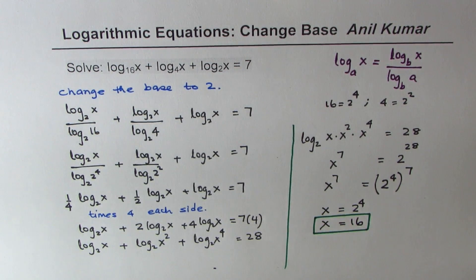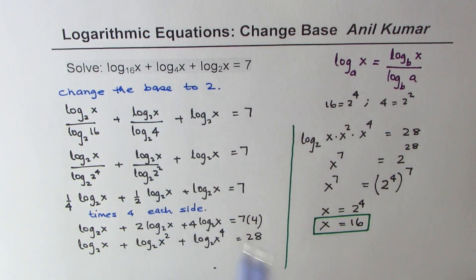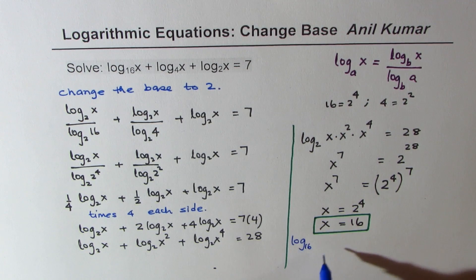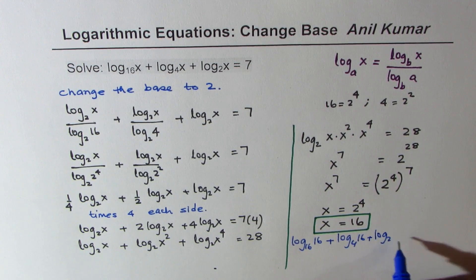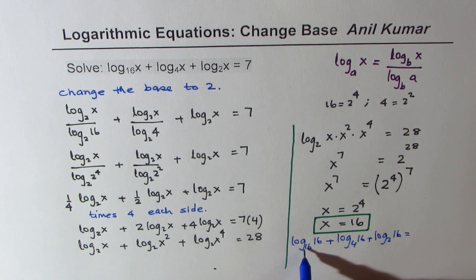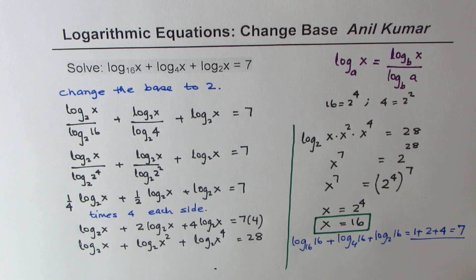So that is how you could actually solve such a question. You can always check the result. If you write 16 for x, what do you get? You get log base 16 of 16 plus log base 4 of 16 plus log base 2 of 16 and that is 1 plus 2 plus 4 and that is indeed equal to 7. So it verifies that the answer is correct.